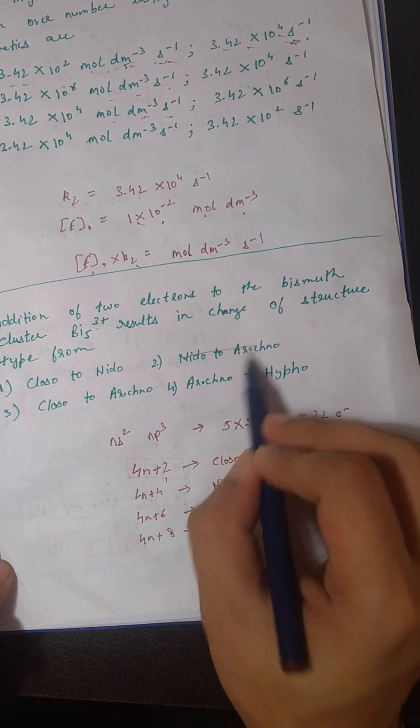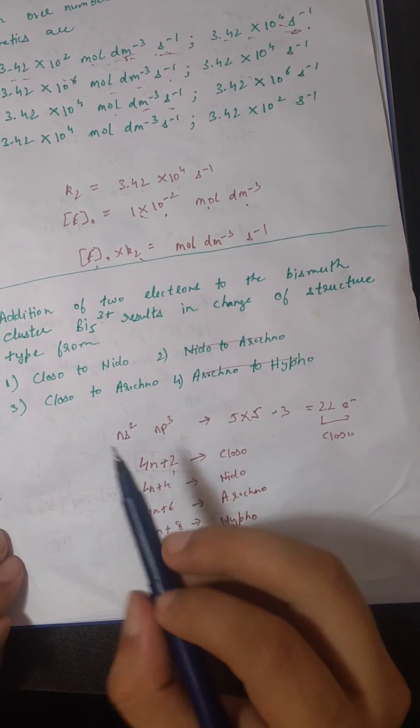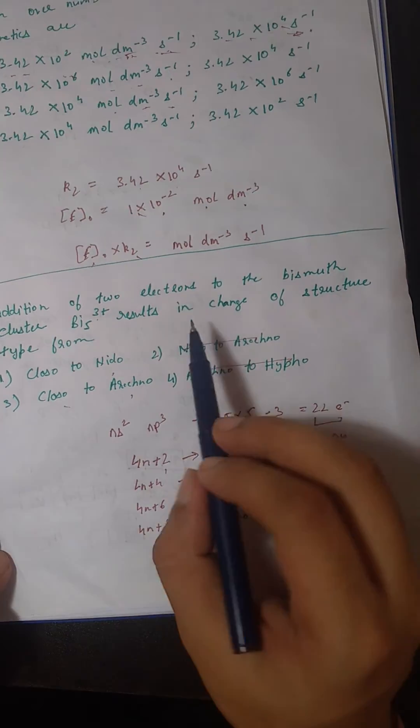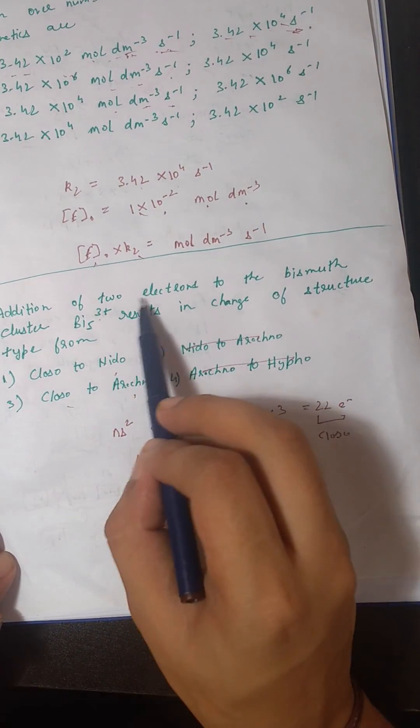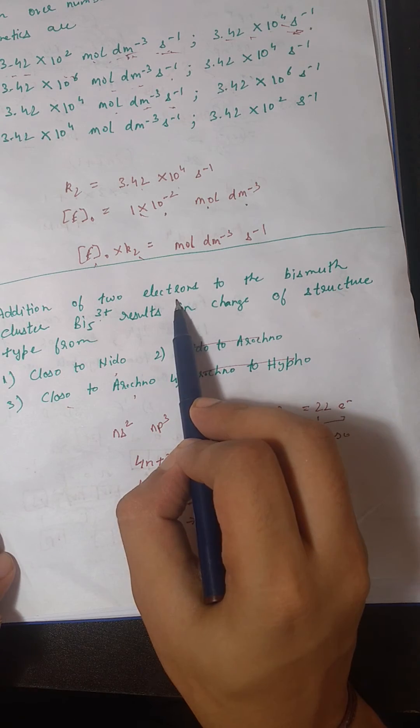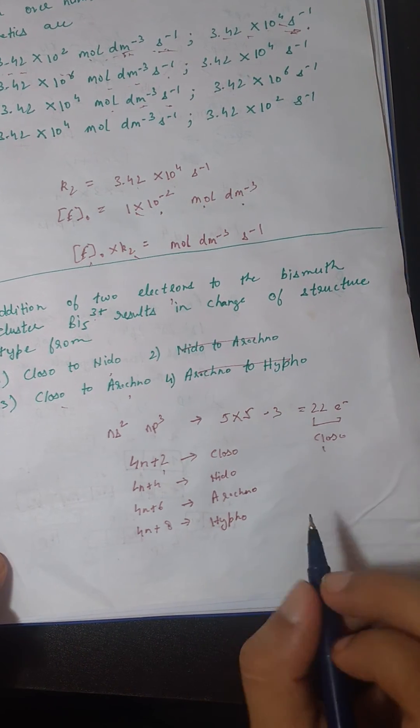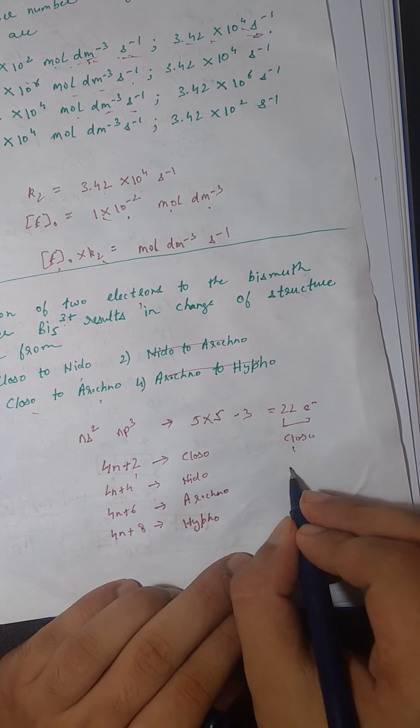From here we can strike out two options: nido to arachno and arachno to hypo. On addition of two electrons, the total electrons in the cluster become 24.